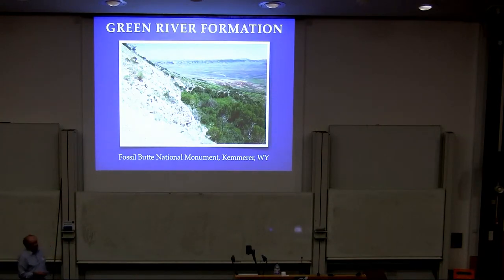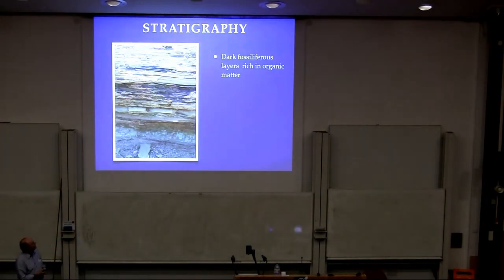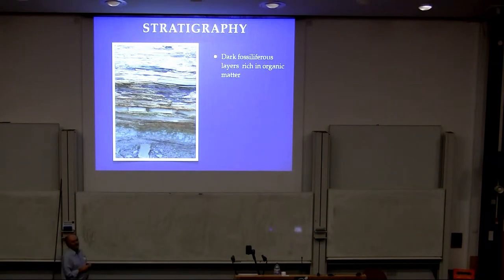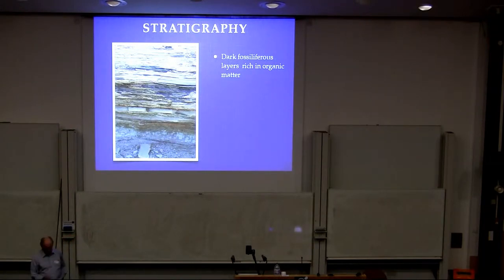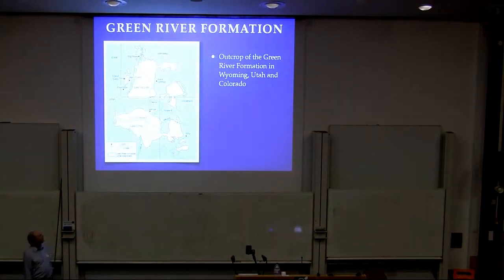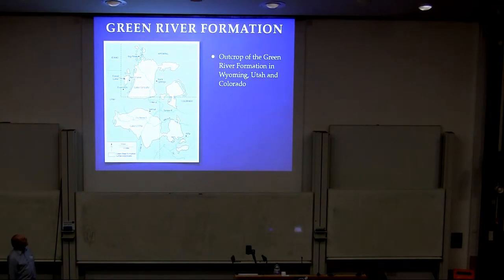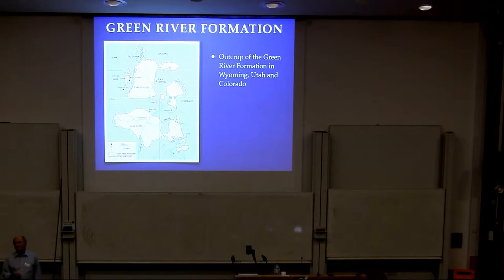Within the rock sequence you find some dark fossiliferous layers rich in organic matter. In fact, some of them are oil shales. The various horizons are abundant in fossils, particularly the well-known fish. This is the outcrop, and you can see it separates into a number of different separated lakes.